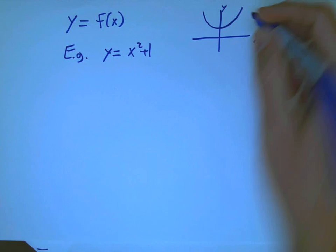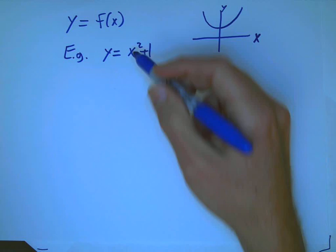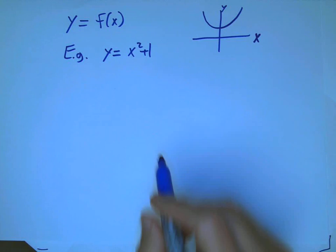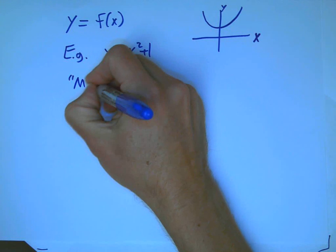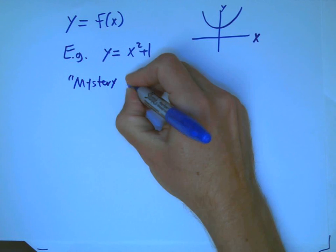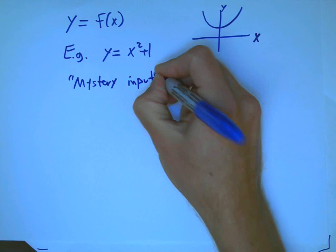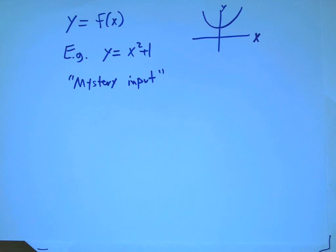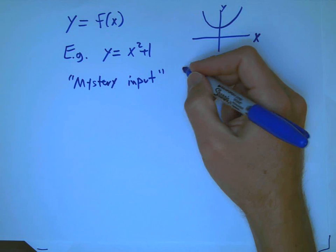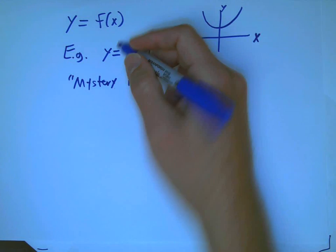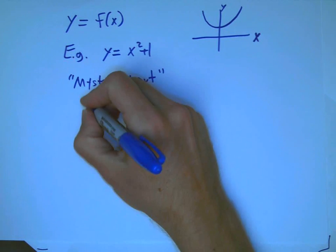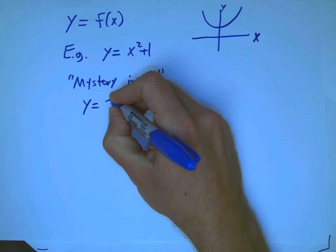What we want to do is ask, can I undo the function? Or can I play the mystery input game? I'm going to give you the output of this function. Can you tell me what I'm thinking of as the hidden mystery input? Well, for this function, that's just not going to work. If I say y equals 5,